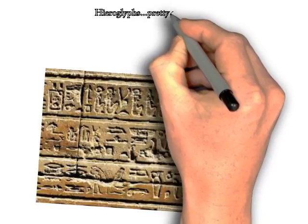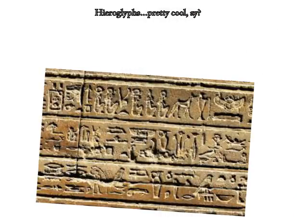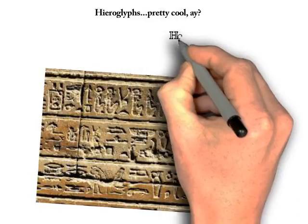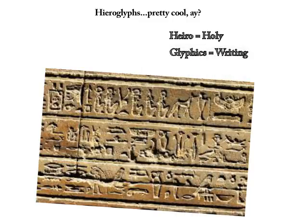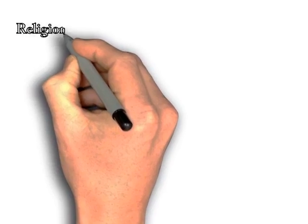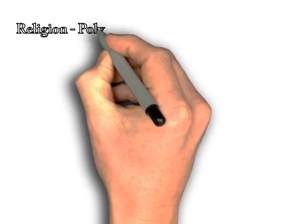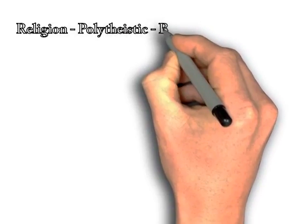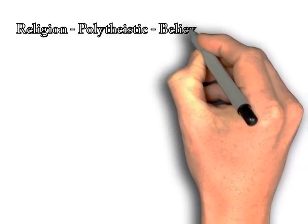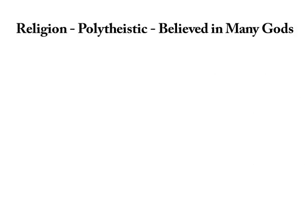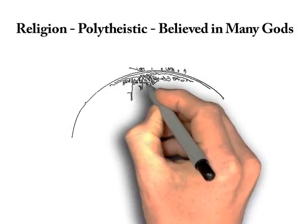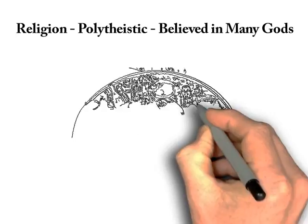Religion. Ancient Egyptians had their own rites with a pantheon of animal-headed gods such as Osiris, Maat, Isis, Horus, Set, Amun, Ra, Thoth, and others. The pharaoh was usually the head of their religion. Religion guided every aspect of Egyptian life. Egyptian religion was based on polytheism.